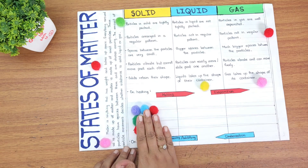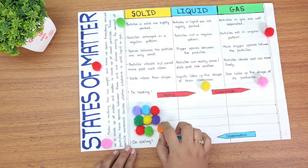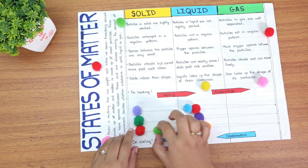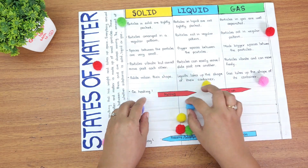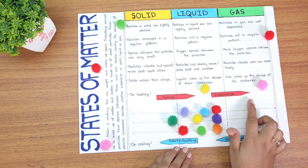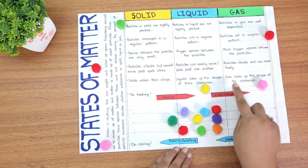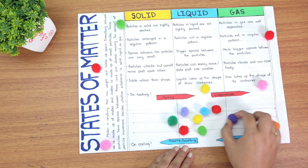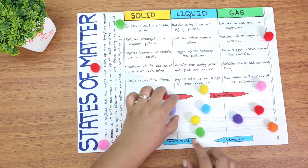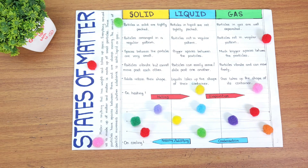On heating a solid, the solid changes to liquid — this is called melting. The particles will rearrange as in a liquid. When we heat the liquid further, it is called evaporation, where the liquid changes to gas. Here, the particles are well separated from one another.